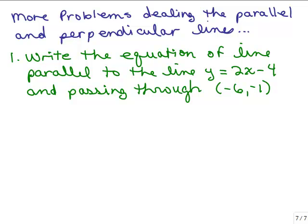We're going to do some more problems dealing with parallel and perpendicular lines. Here's an example where we put what we know about parallel lines and how to write equations of lines. Write the equation of a line parallel to y equals 2x minus 4 and passing through negative 6, negative 1. Notice that negative 6, negative 1 is not on the line y equals 2x minus 4, so it's on a line parallel to that.